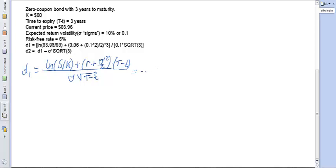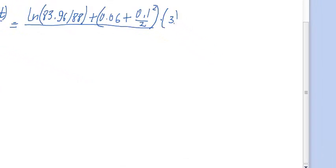Plugging in the numbers: d1 equals log-normal of (83.96 / 88) plus (0.06 plus 0.1 squared divided by 2) times 3, all divided by 0.1 times the square root of 3. Calculating this on a calculator gives approximately 0.85. This is the d1 value we will use in the Z-table.